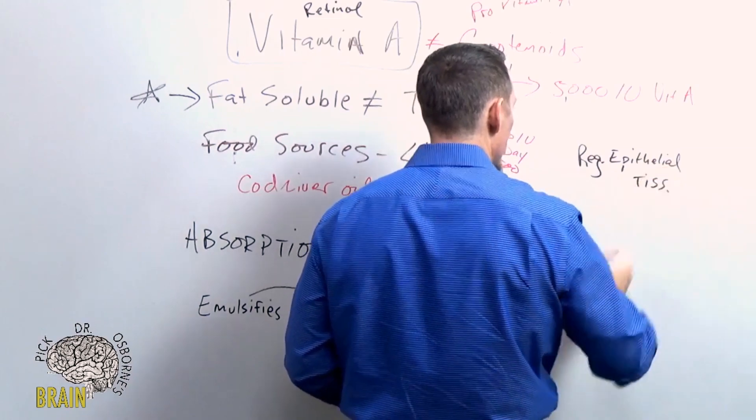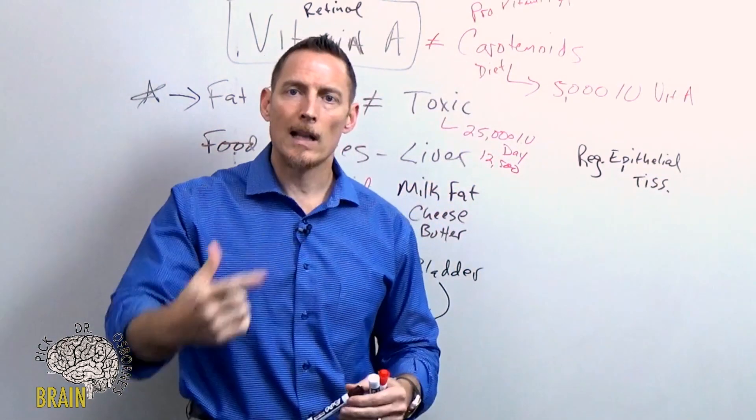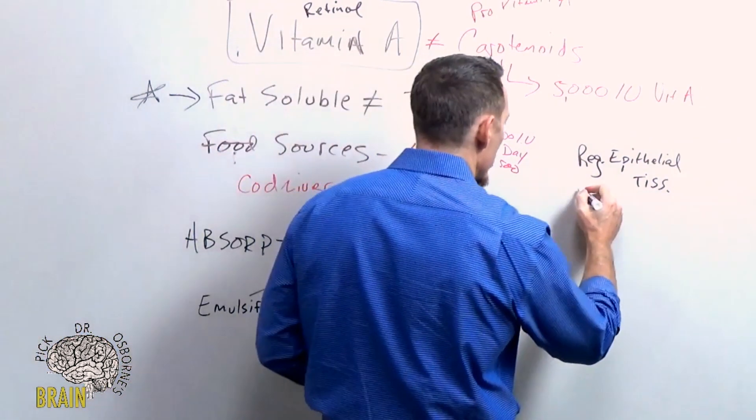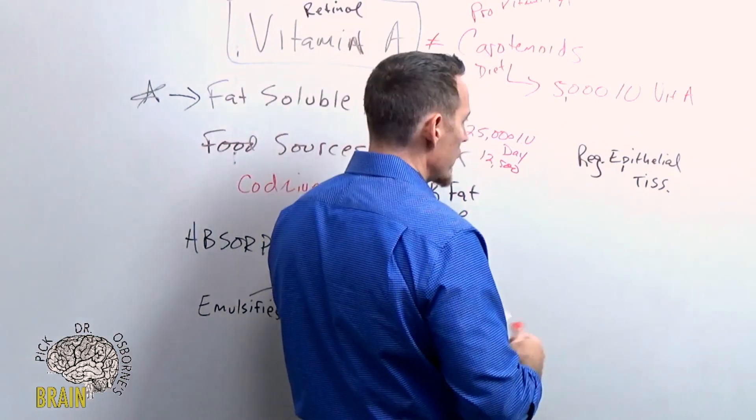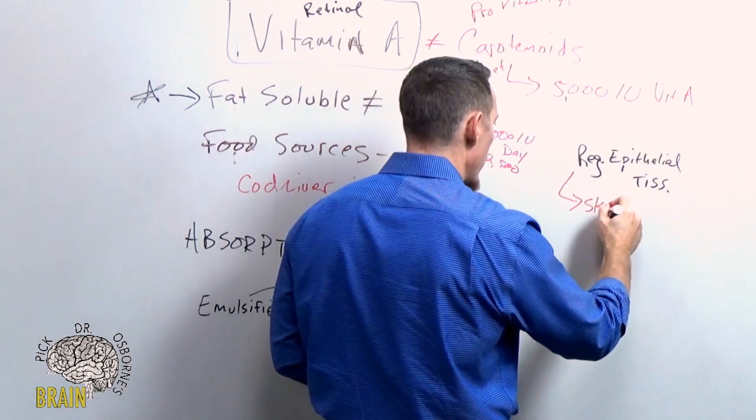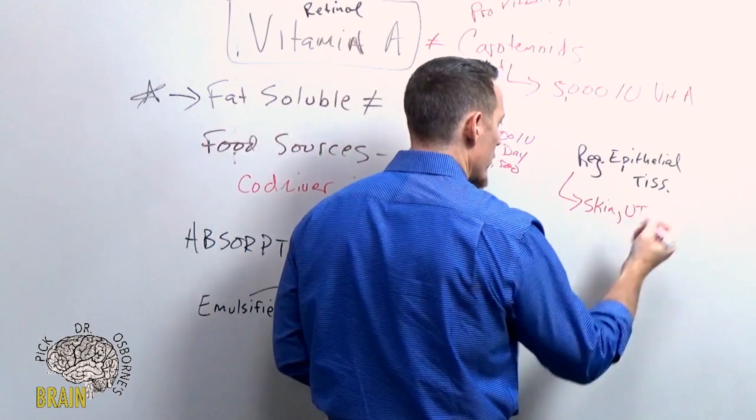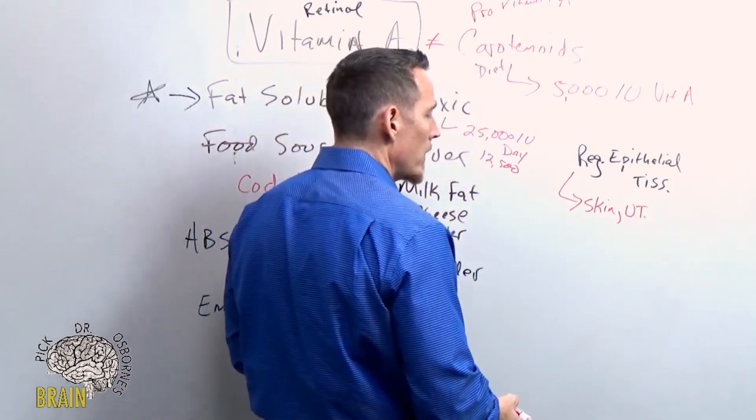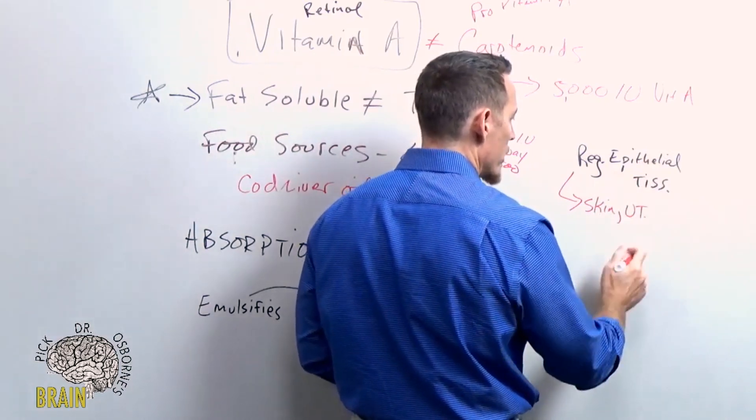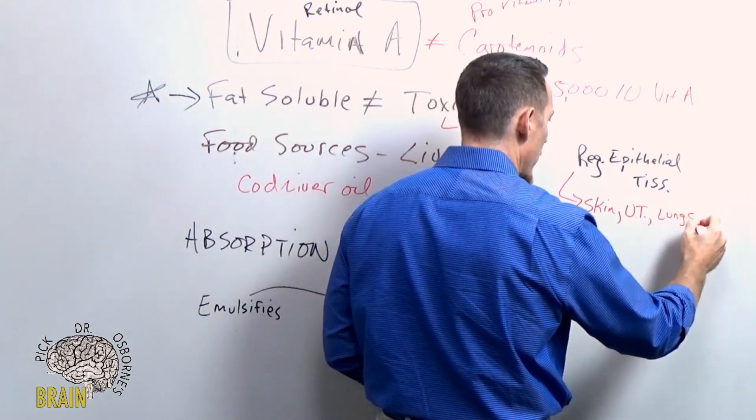What is epithelial tissue? Epithelial tissue is a type of tissue that covers or lines something. So for example, what are the different types of epithelial tissue? Your skin is epithelial tissue, so healthy skin requires vitamin A. Your urinary tract - we'll abbreviate that, your UT - requires epithelial tissue, so you need vitamin A for a healthy urinary tract. Your lungs require vitamin A. Your GI lining...